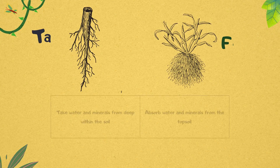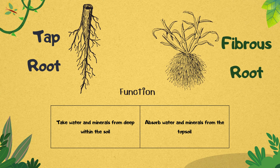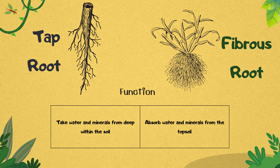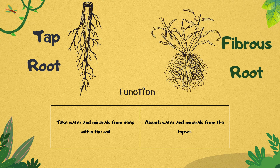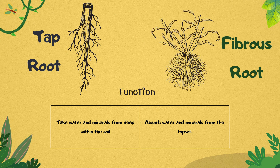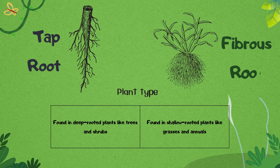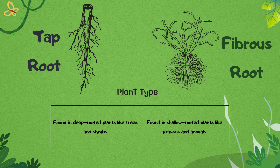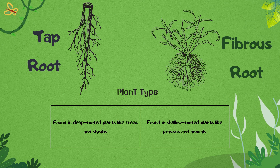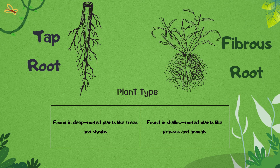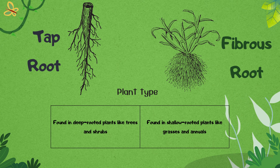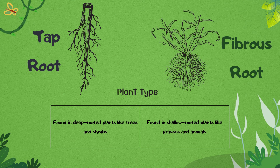Taproots take water and minerals from deep within the soil, whereas fibrous roots absorb water and minerals from the topsoil. Taproots are found in deep-rooted plants like trees and shrubs, whereas fibrous roots are found in shallow-rooted plants like grasses and annuals.